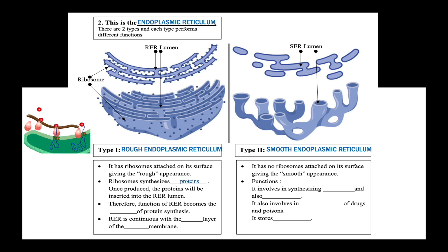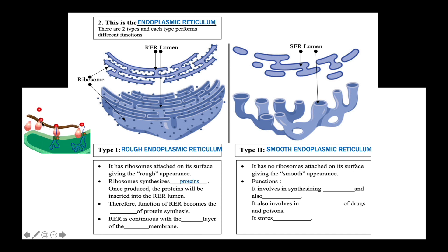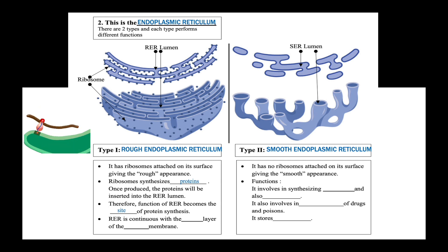This is the rough endoplasmic reticulum — this is its lumen, the pink blobs are the ribosomes, reading the brown strand, the mRNA. As the message in the mRNA is read by the ribosome, polypeptide is produced and inserted into the RER lumen. Therefore, the function of the rough endoplasmic reticulum is to act as the site of protein synthesis. We know that the rough endoplasmic reticulum is continuous with the outer layer of the nuclear membrane.